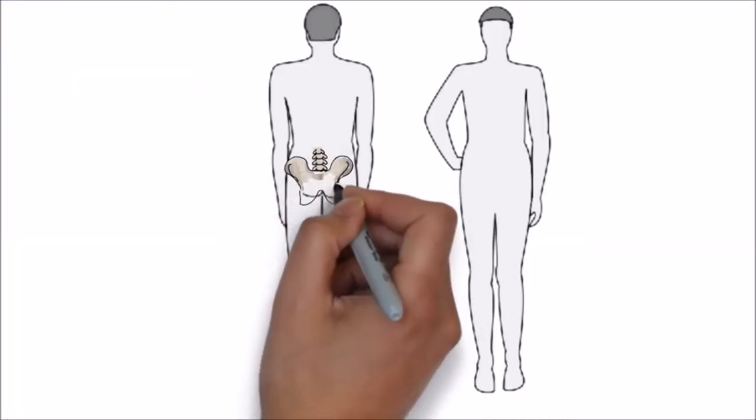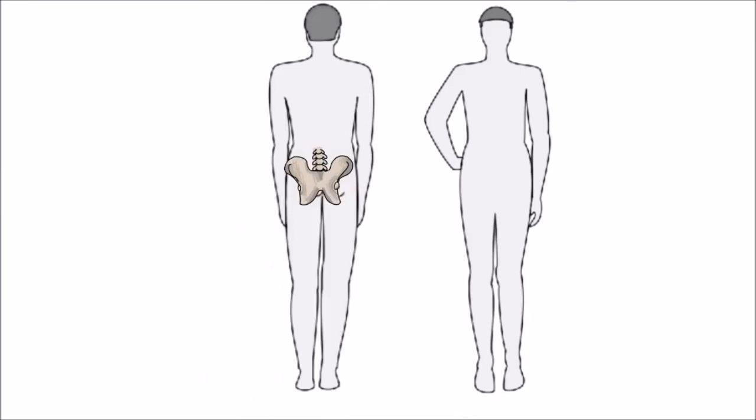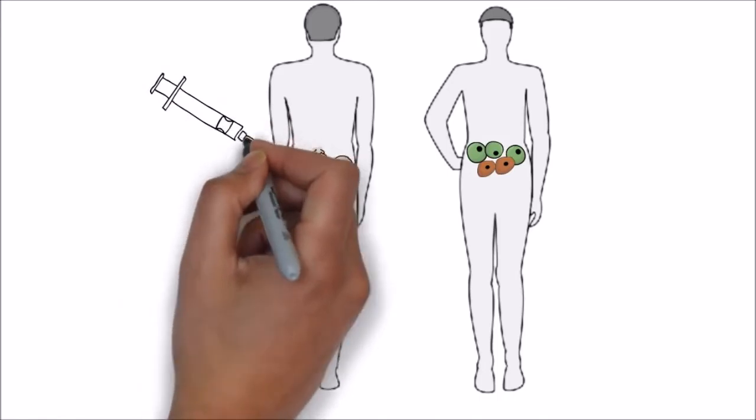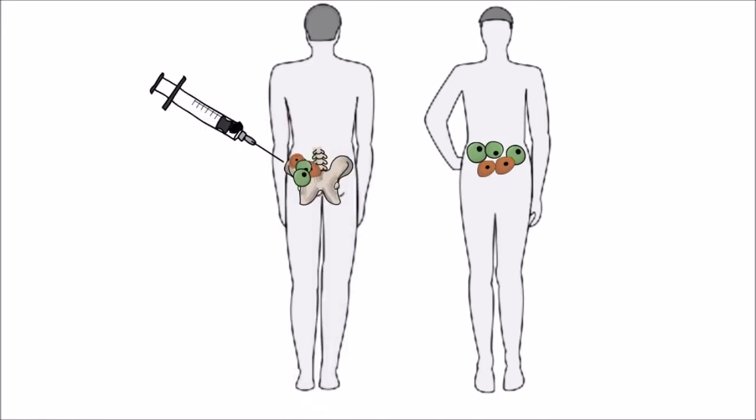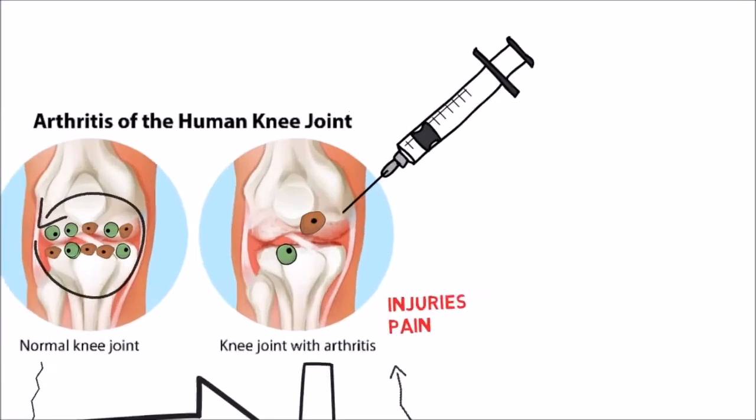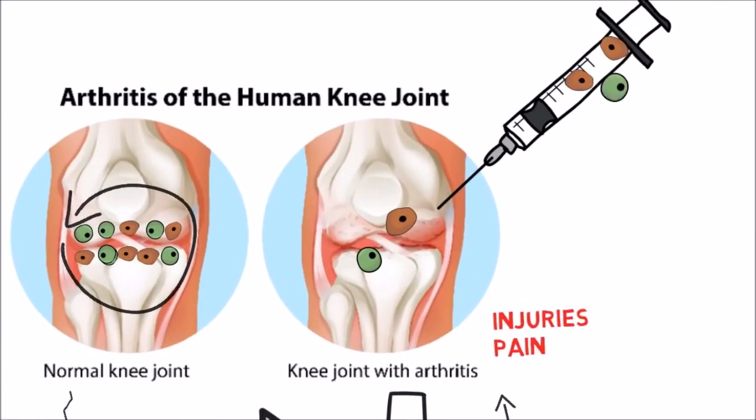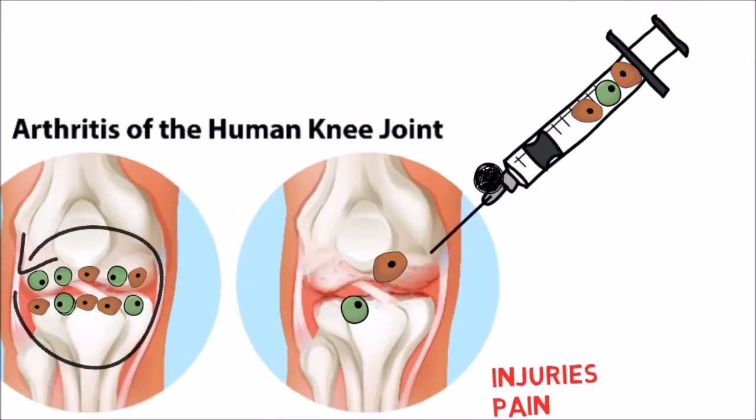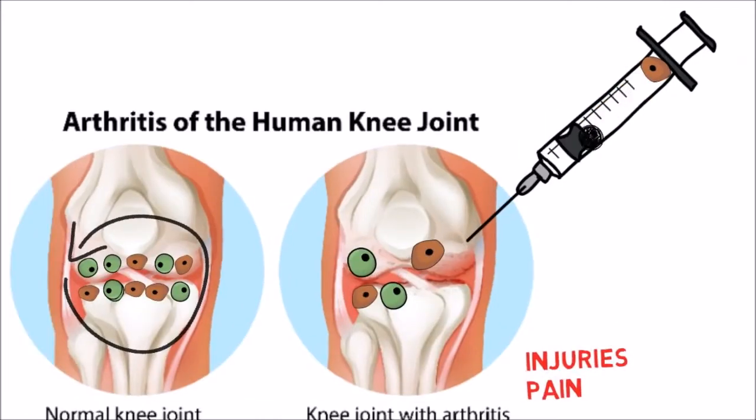But fortunately, there are areas of your body that keep a good number of stem cells. These areas include the bone marrow of the hips and the fat in your abdomen and buttocks. And this is the key to stem cell therapy. The doctor will take stem cells from one or both of these areas and transfer them to the area of injury or arthritis. This will provide the stem cells needed for repair.